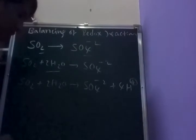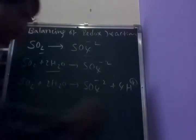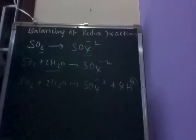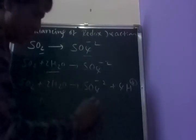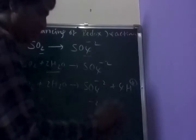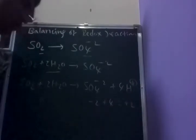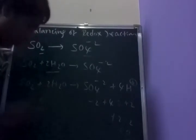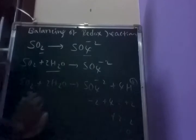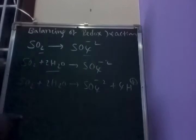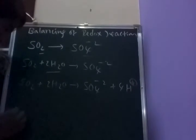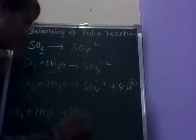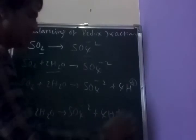Next, balancing of charges — charges are balanced by using electrons, where one electron equals minus one. Reactant side charge is zero. Product side: minus 2 plus 4 times plus 1 equals plus 2. If we add 2 electrons to the product side: plus 2 minus 2 equals zero. Charges are balanced. So the balanced oxidation half reaction is: SO₂ plus 2H₂O gives rise to SO4²⁻ plus 4H⁺ plus 2 electrons.